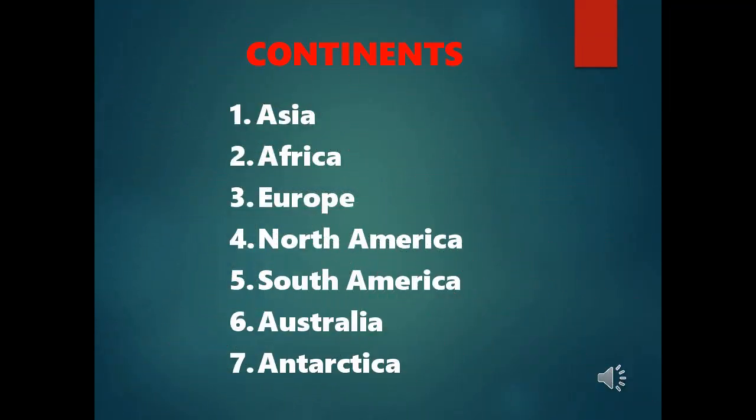The land on the earth is divided into continents. There are seven continents. They are Asia, Africa, Europe, North America, South America, Australia, and Antarctica. Asia is the largest continent and Australia is the smallest one.